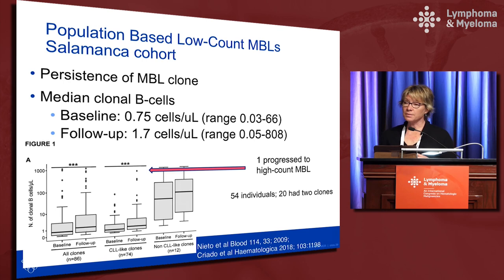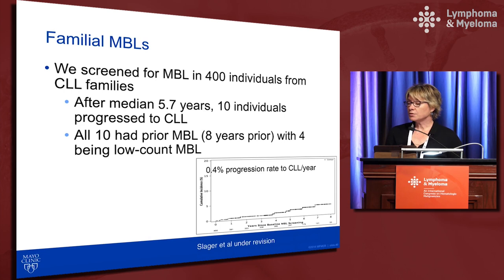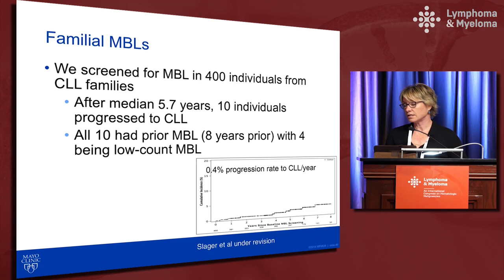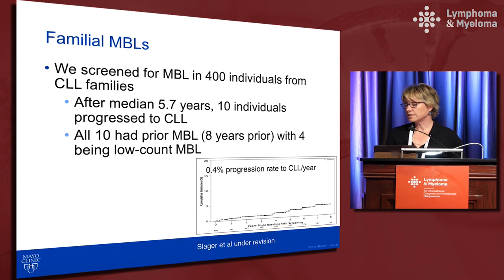In familial CLL studies, 400 individuals from families with two or more CLL members were screened for MBL. After just 5.7 years of follow-up, 10 individuals progressed to CLL — all 10 had MBL prior to their diagnosis, one as far as eight years prior, with four having been low-count MBLs at initial screening. The estimated progression rate to CLL is about 0.4% per year.